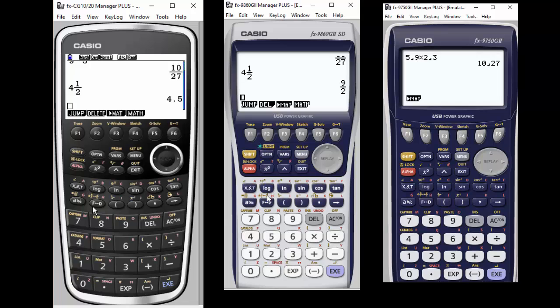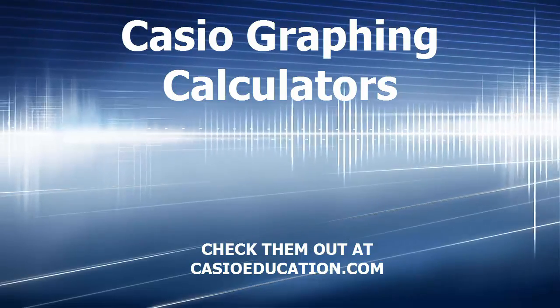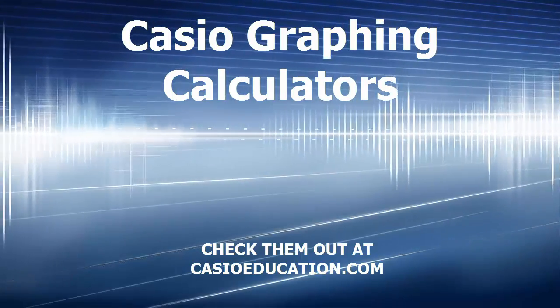Obviously, there's a lot of decisions to make. Cost might be an element. It goes from more affordable from the right to the left. But check out all the features on CasioEducation.com.